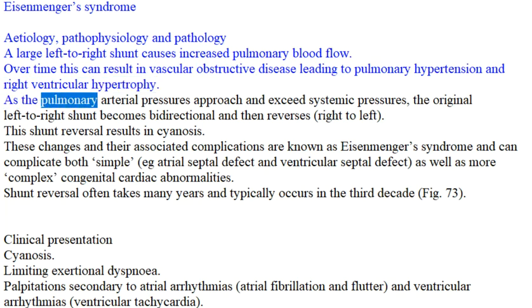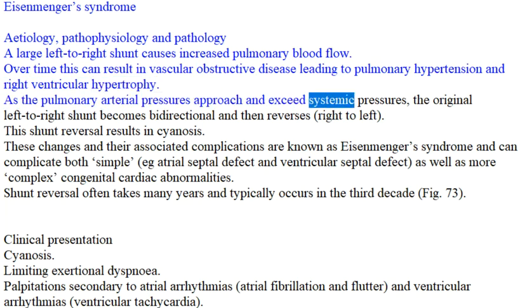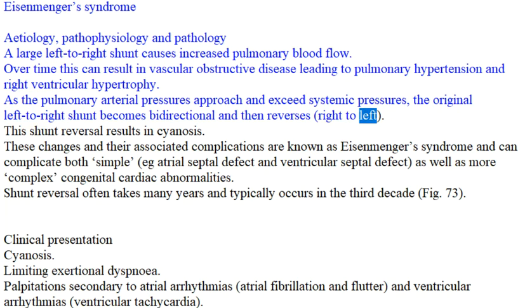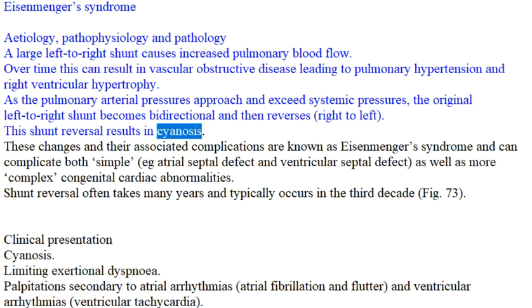As the pulmonary arterial pressures approach and exceed systemic pressures, the original left-to-right shunt becomes bi-directional and then reverses, right-to-left. This shunt reversal results in cyanosis.